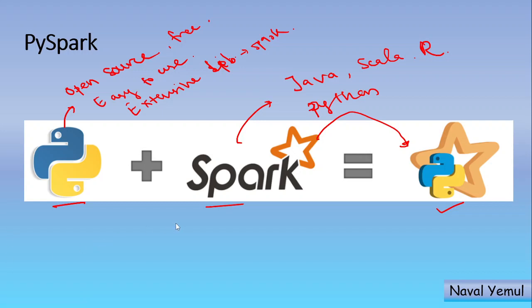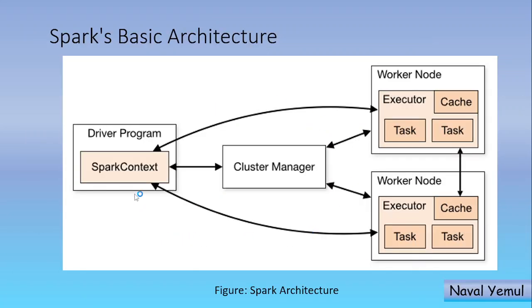We are going to deep dive into the architecture of Spark — very important, and I am explaining it in a very simple language. This is the basic architecture of Spark. There are three major or core components of Spark. If you compare with the architecture of Hadoop, there we had MapReduce for processing — here we have Spark. We had HDFS for storage — here we also have storage. And we had YARN as the cluster manager — here we also have a cluster manager. In Hadoop we call it master and slave nodes, but in Spark we call it the driver program and worker nodes.